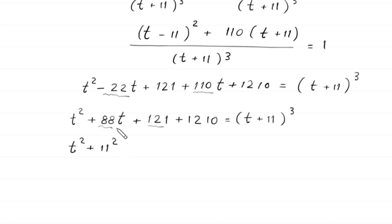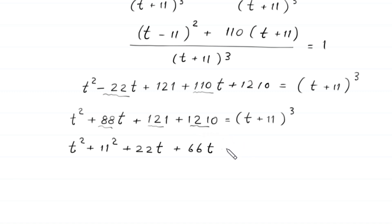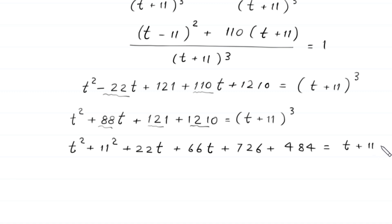We rewrite 88t as plus 22t plus 66t, and we rewrite 1210 as plus 726 plus 484, equal to t plus 11 whole cubed.